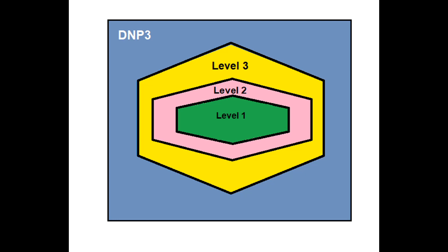The same is true for the other subset levels. For this class we will only consider features that are part of subset levels one, two, or three. If a feature is not in one of those subsets, then for the purpose of this class it is considered not to exist. This is significant since the DNP3 Users Group has published conformance test procedures for each of the first three levels.